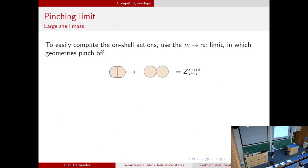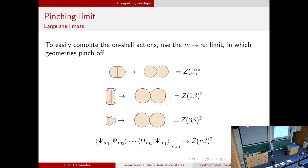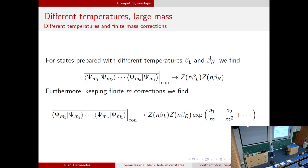Let me mention a specific limit where we can do computations and get very simple results. If we take the masses of the shells to be very large, the on-shell geometries pinch off, and things like the norm squared, wormhole contributions, and higher boundary wormholes are simply given by partition functions with different inverse temperatures squared. In general, the connected contribution to the nth moment of the overlaps is given by the partition function squared with n times beta as inverse temperature. This can be generalized to asymmetric setups and we can also include finite mass corrections going away from this pinching limit.